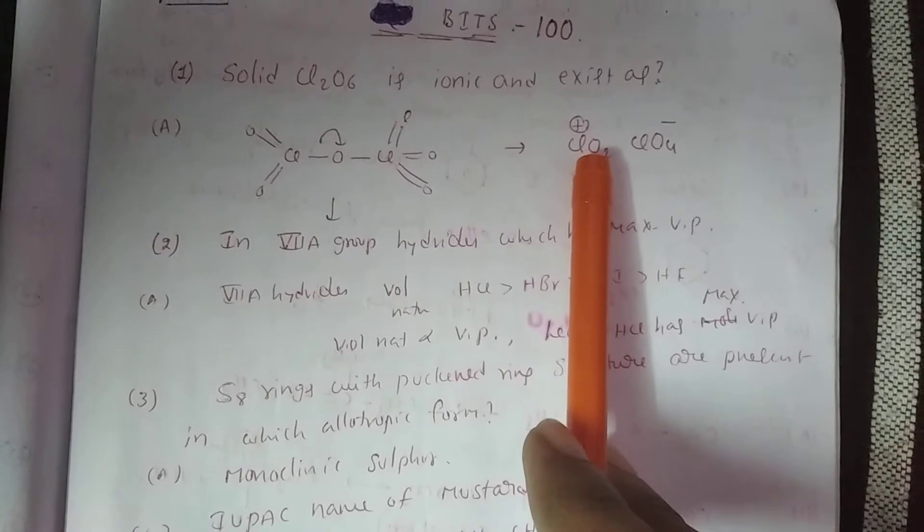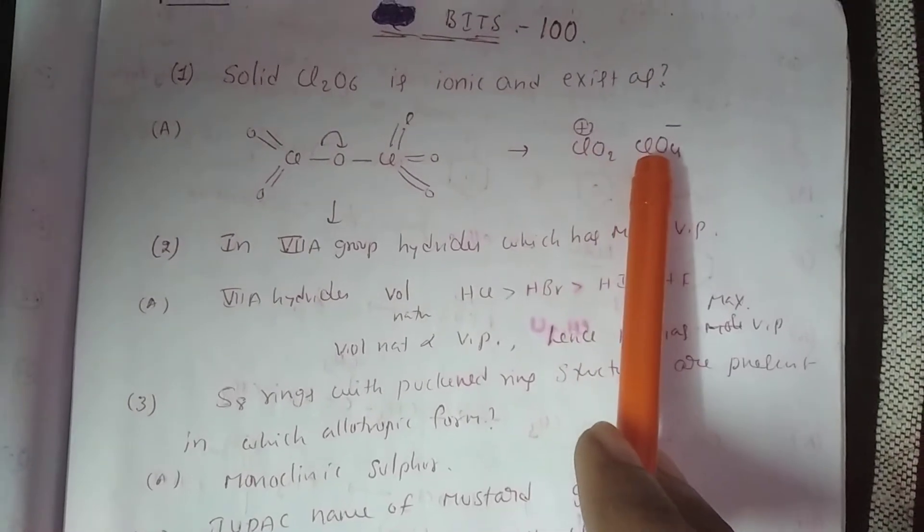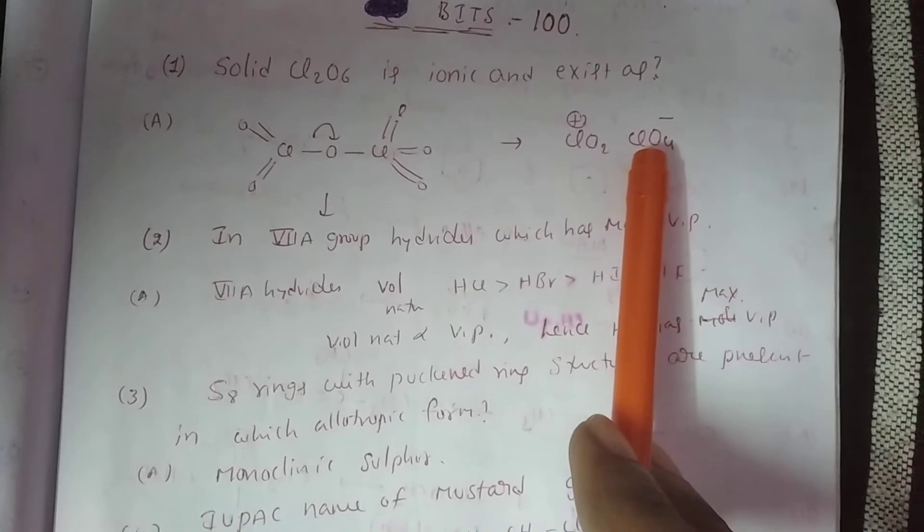ClO2 has sp2 hybridization and ClO4 minus has sp3 hybridization.